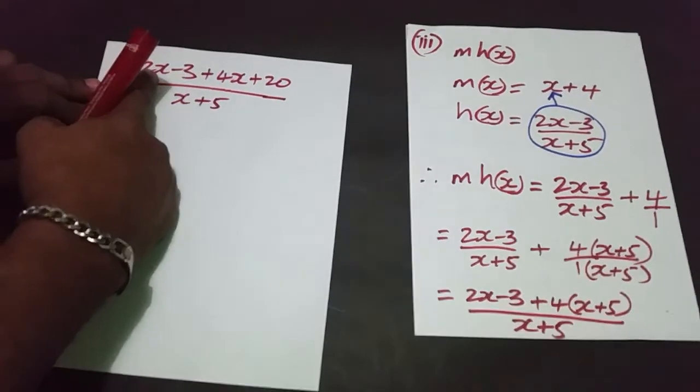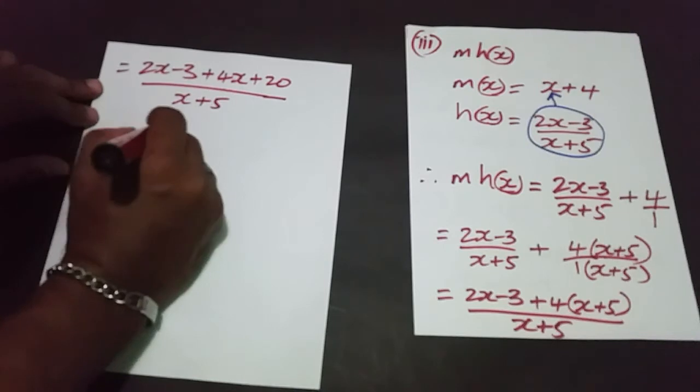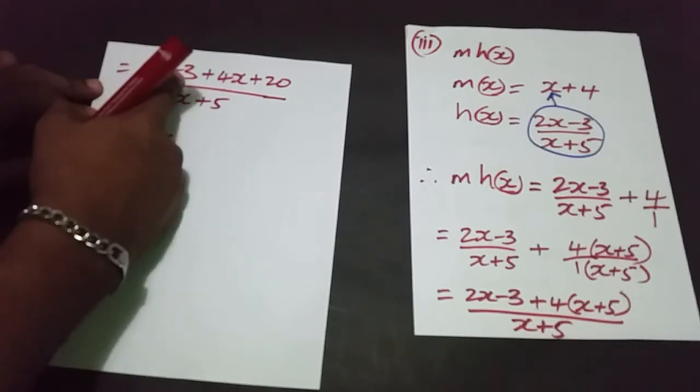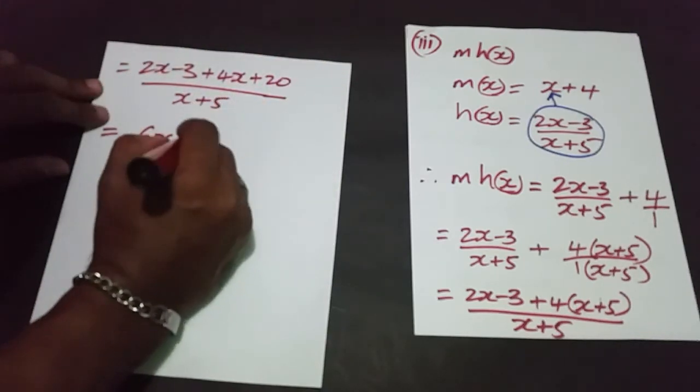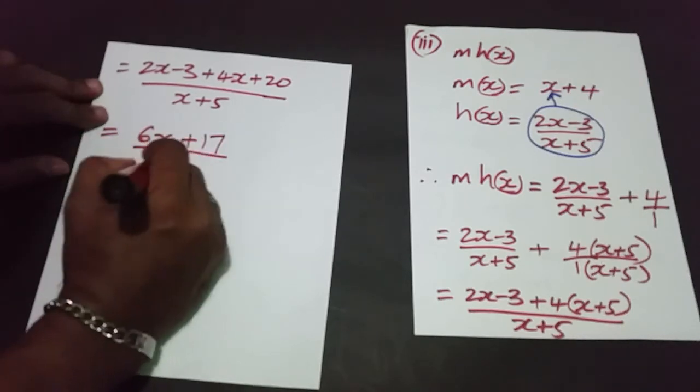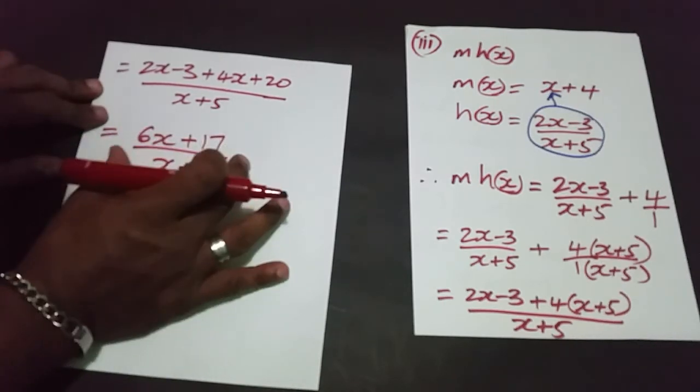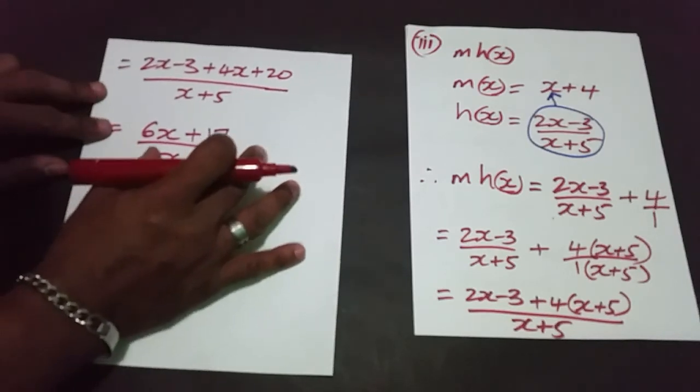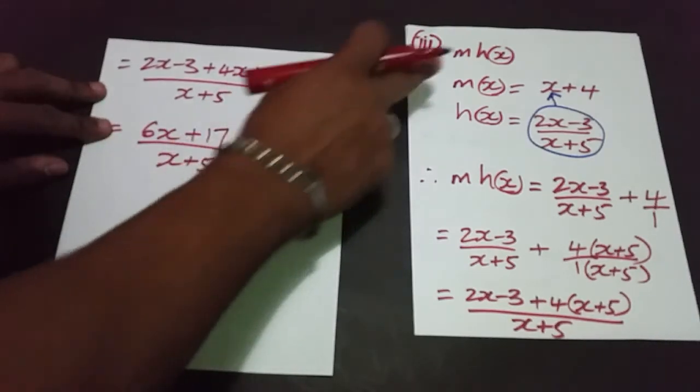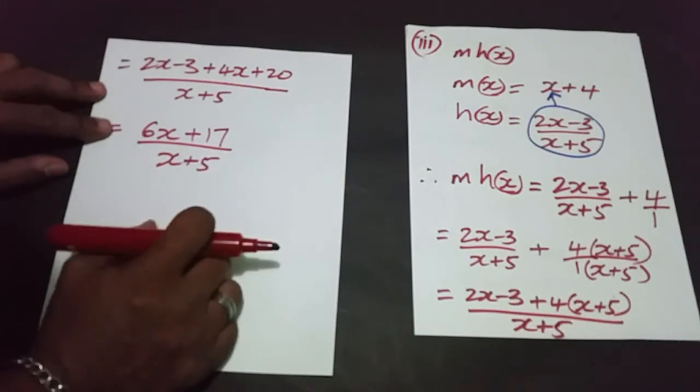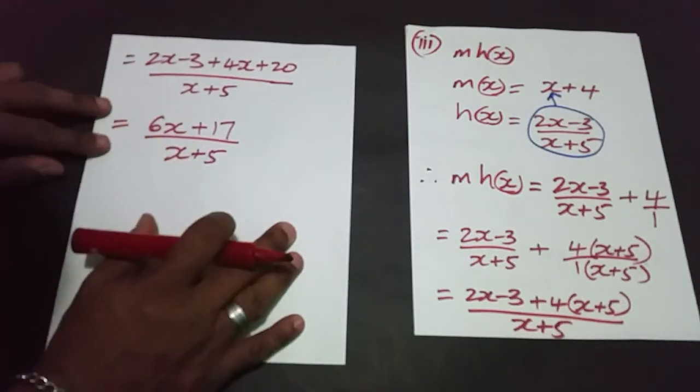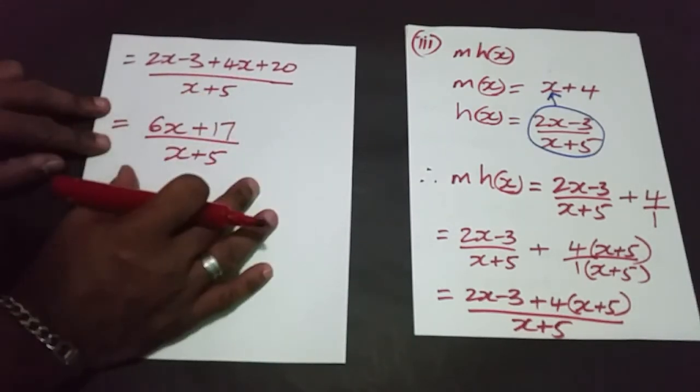So like terms, 2x plus 4x is 6x, and minus 3 plus 20 is positive 17 over x plus 5. And clearly this cannot be simplified any further, and we've answered the question because it asks us to find the composite function m of h of x as a single fraction.